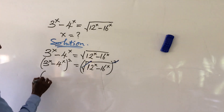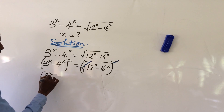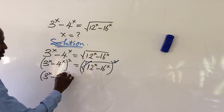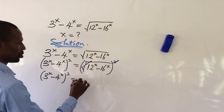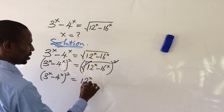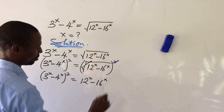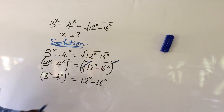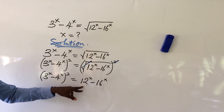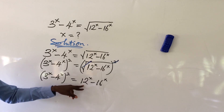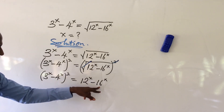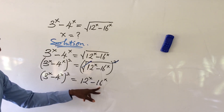From here, our equation becomes: (3^x minus 4^x) to the power of 2 equals 12 to the power of x minus 16 to the power of x. Now we take a critical look at this. 12 can be written as 3 times 4, and 16 can also be written as 4 times 4.